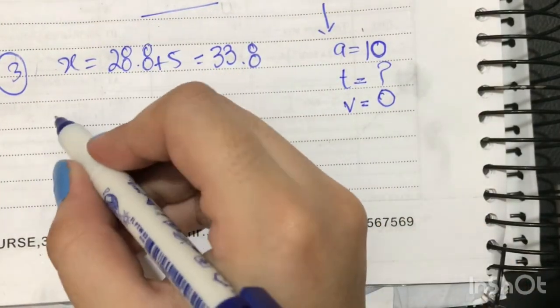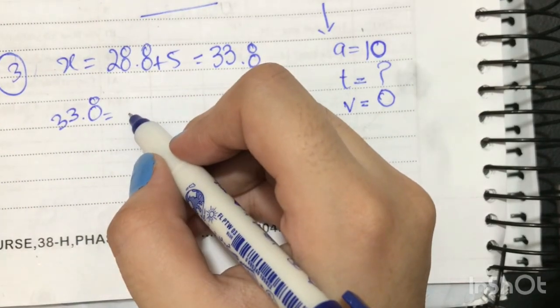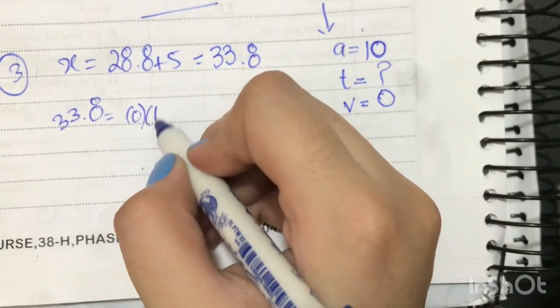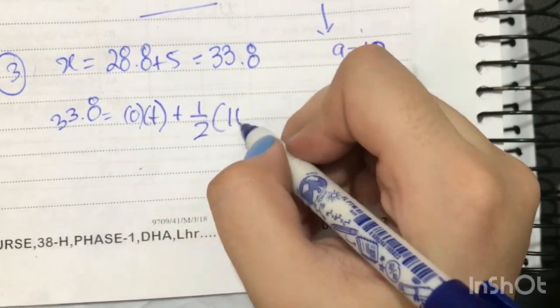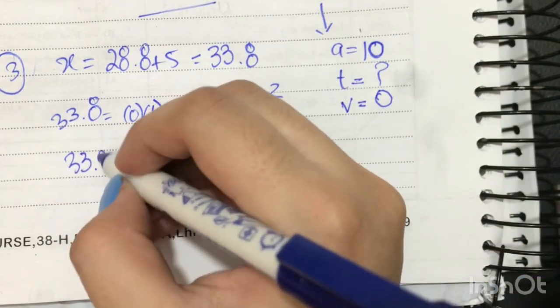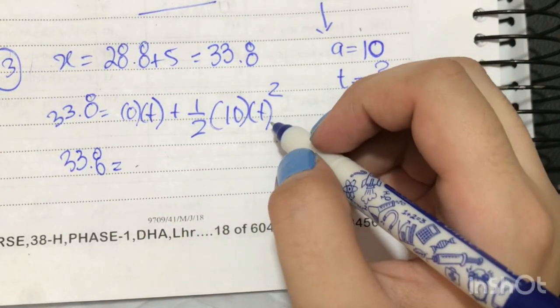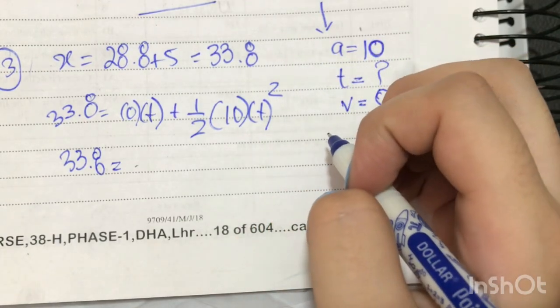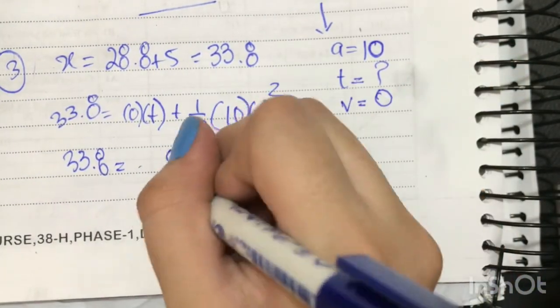So this will be 33.8 equals, u is 0, so time equals plus half at squared. 33.8 equals 5t squared, so the time will become square root of 33.8 divided by 5.